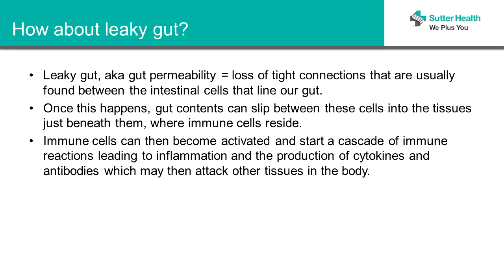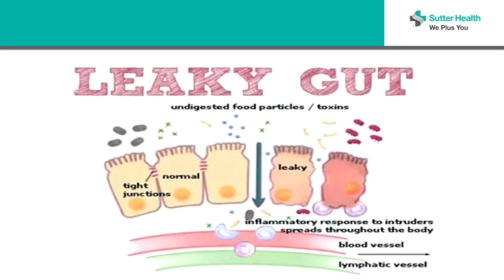So once this happens, if we've eaten something and we haven't fully digested it, and that gut barrier is leaky, we will be absorbing things that we shouldn't be absorbing, and then the immune cells can become activated. This little diagram shows on the left the normal tight junctions. But if those break apart and there's leaky stuff, these undigested food particles can pass through, and right down here are the immune cells, blood vessels, and lymphatics — so we start this inflammatory process here.